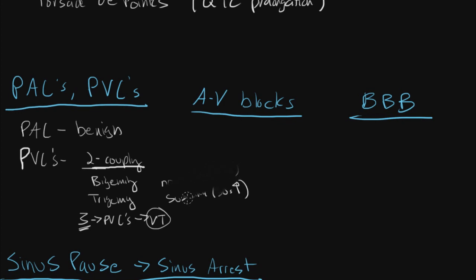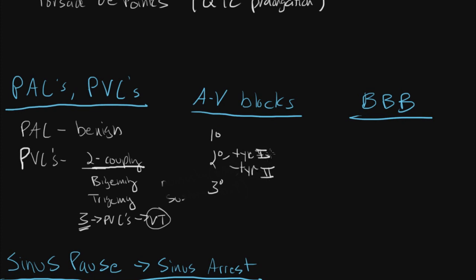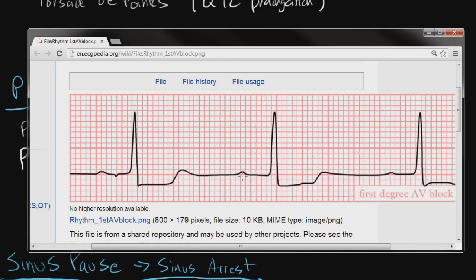Next I'm going to mention AV blocks. AV blocks are basically when you have a prolonged PR interval or an abnormality in your PR, and there are three types: first degree, second degree, and third degree AV block. Second degree is broken up into type 1 and type 2 — also known as Wenckebach block and Mobitz block respectively. In a first degree block, your PQ interval is prolonged — more than 0.2 seconds, which is one large box — and your P and QRS complex is still associated in a predictable, regular fashion. That's your first degree block, and it's usually pretty benign.